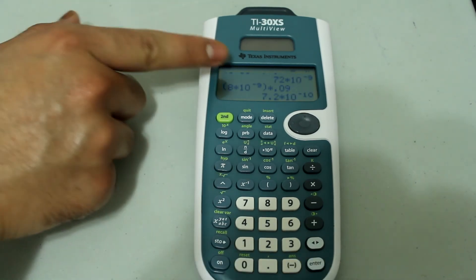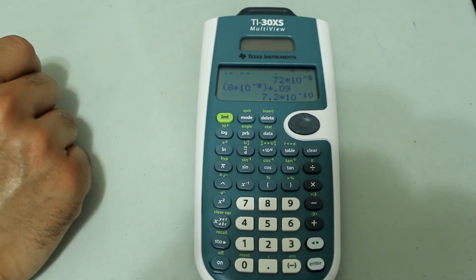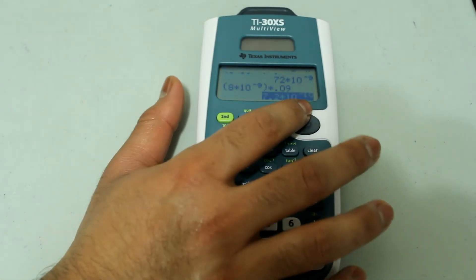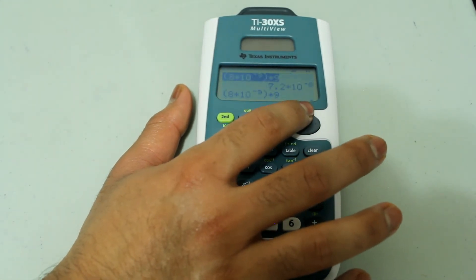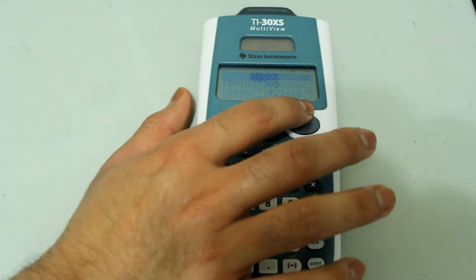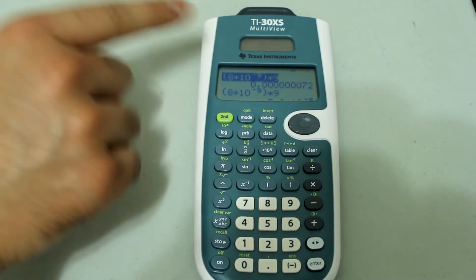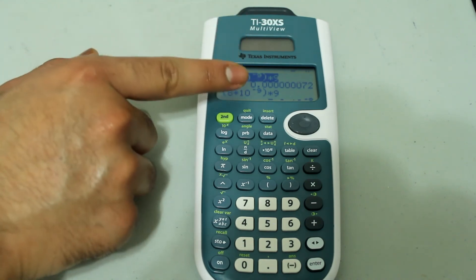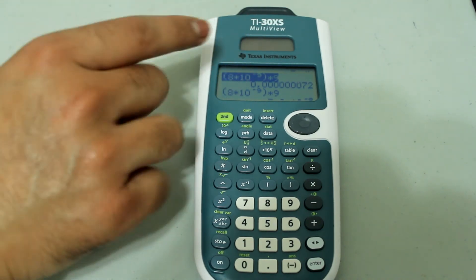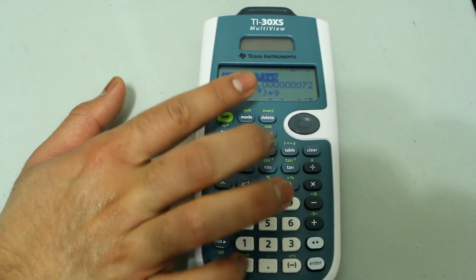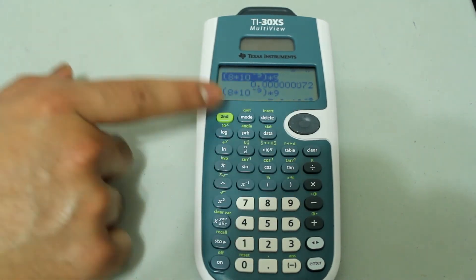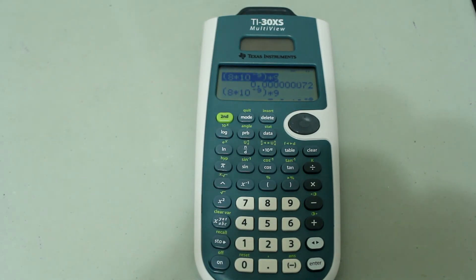However, as you notice, for answers that the calculator is capable of displaying in decimal mode, it will display in decimals. So if you wanted to see this in scientific notation, you might just want to switch the mode to scientific mode.